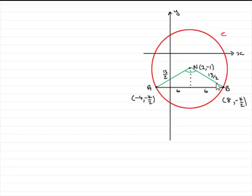So we have the two radii of length 13 over 2, and the chord length of 12 units. How do we get this angle? There are several ways we could do it.